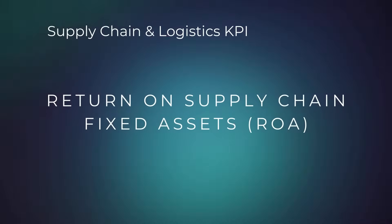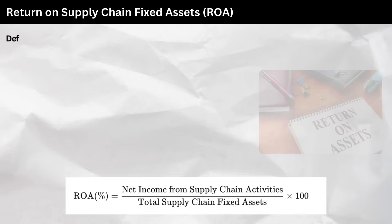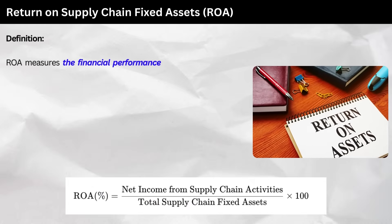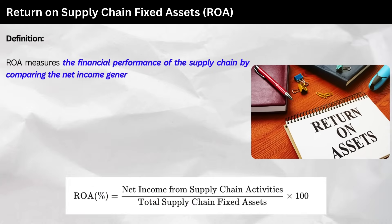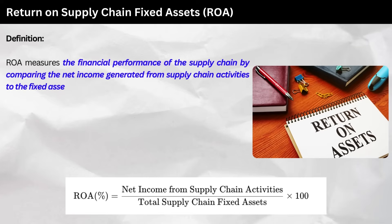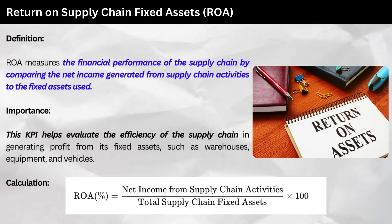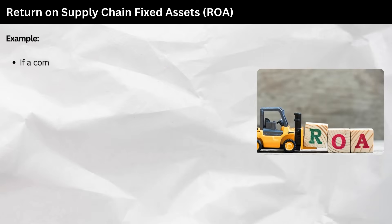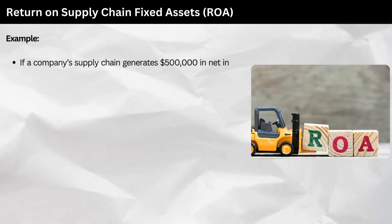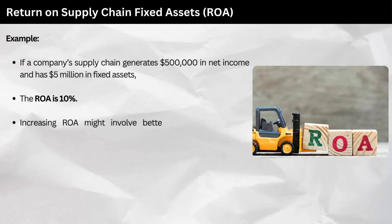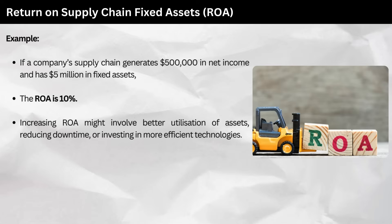8. Return on Supply Chain Fixed Assets (ROA). Definition: ROA measures the financial performance of the supply chain by comparing the net income generated from supply chain activities to the fixed assets used. Importance: this KPI helps evaluate the efficiency of the supply chain in generating profit from its fixed assets, such as warehouses, equipment, and vehicles. Calculation: as follows. Example: if a company's supply chain generates $500,000 in net income and has $5 million in fixed assets, the ROA is 10%. Increasing ROA might involve better utilization of assets, reducing downtime, or investing in more efficient technologies.